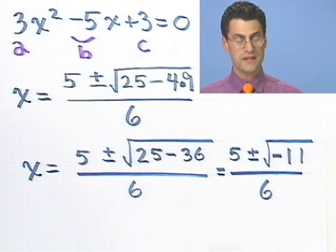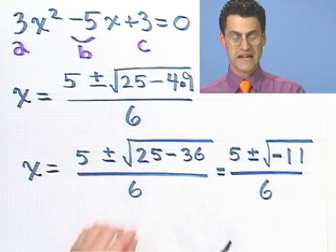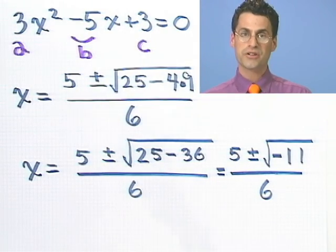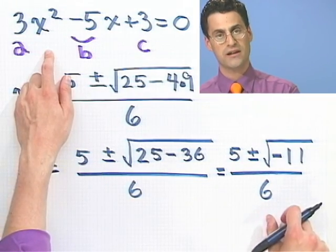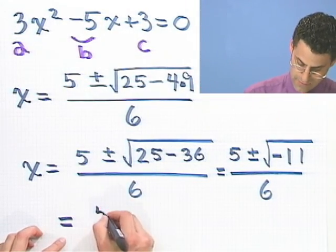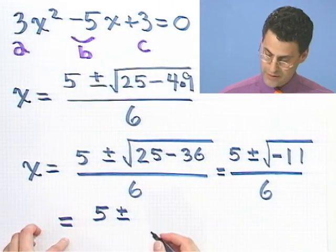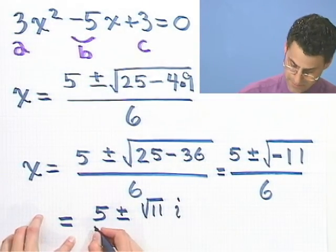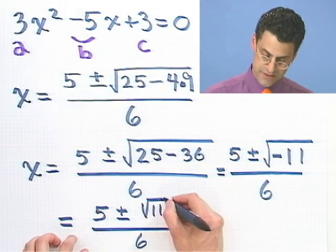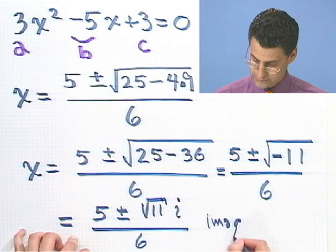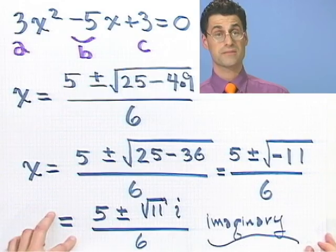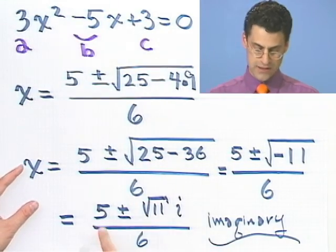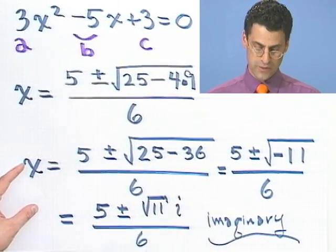What this means is that this equation has no real solutions at all — this can't be solved with a real number x. However, the quadratic formula actually gives us the power to produce what the two answers really are. The two answers are imaginary numbers, and we can write them like this: 5 plus or minus — remember the square root of minus 11 is just the square root of 11 times i, because i is the square root of minus 1 — all over 6. So the two imaginary answers are 5 plus square root of 11i over 6, and 5 minus square root of 11i over 6.